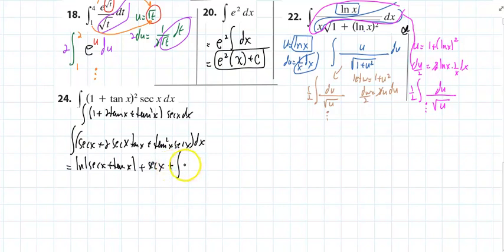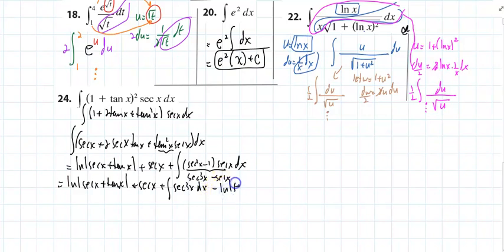And how about here? If I let u equal secant, secant tangent, that's not working. So isn't this right here secant squared of x minus 1 times secant of x dx? And that would be... So this is actually secant cubed of x minus secant of x minus secant of x. So this is going to be the integral of secant cubed of x dx minus natural log of secant of x plus tangent of x plus c.